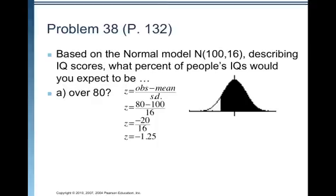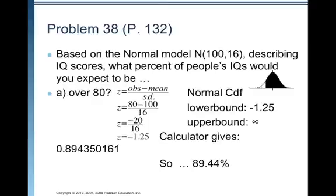And so, we draw our little picture. We estimate where negative 1.25 would be. And since it's over 80, we want everything that's over negative 1.25, so bigger than negative 1.25. So, we shade to the right. We grab our calculator and we go to the scratch pad, menu, statistics, distribution, select normal CDF. We use the lower bound of negative 1.25, and we're going to positive infinity. The calculator gives 0.8943 and so 89.44%. So, 89.44% of people would have IQ scores over 80.